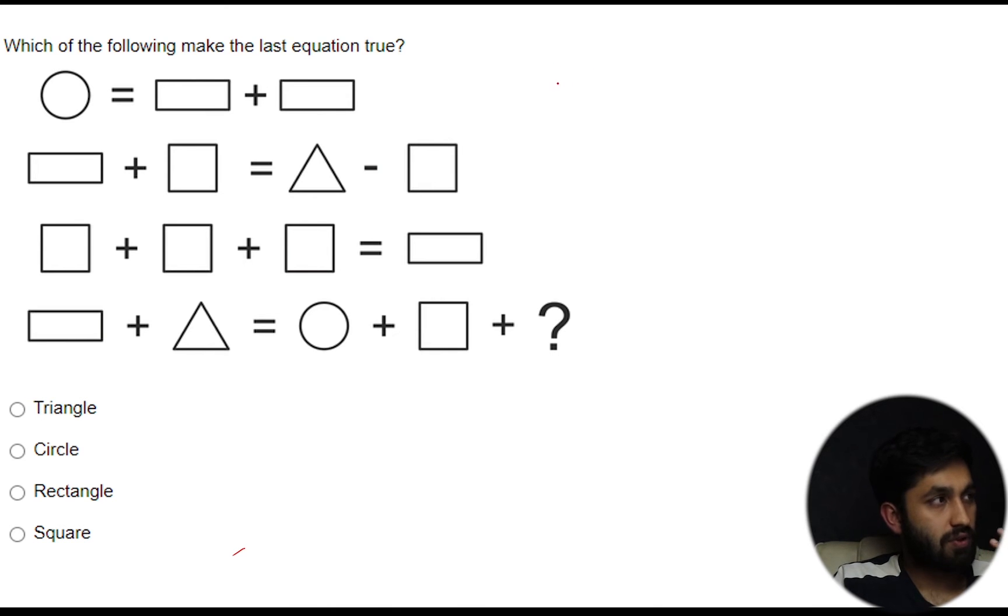So to make life easier each of these shapes I'm going to abbreviate by their letters. So circle is C, rectangle is R, square is S, triangle is T. You get the idea.